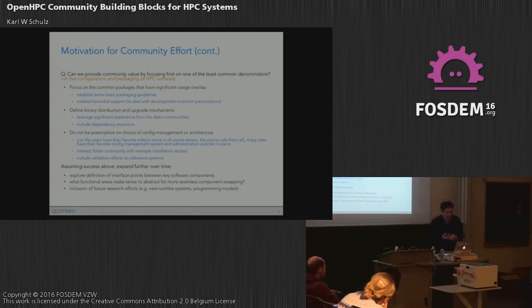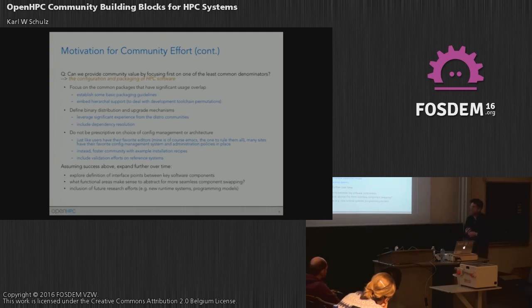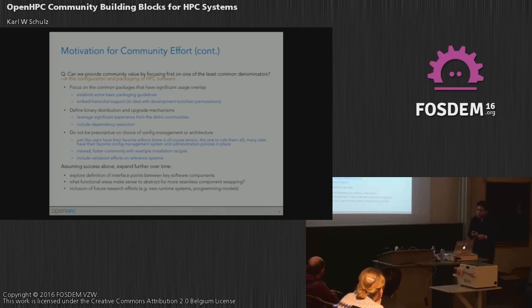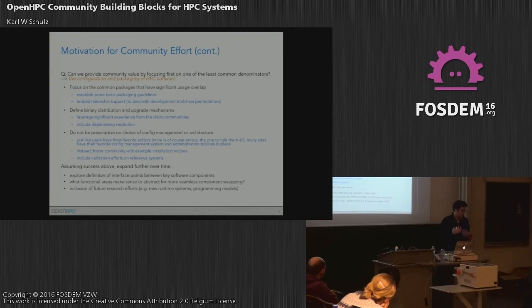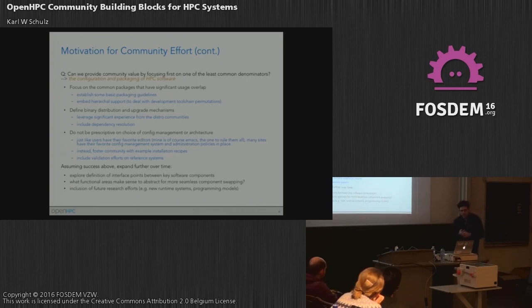Hierarchical support is something very important to HPC — it's very different than a typical distro install where you often only install one version of a compiler. HPC means having five versions of a compiler in many different families. To be clear, this is actually trying to provide a binary distribution for certain packages — think of it as a midstream-type distro. There is an effort to provide binaries so people can point their repositories to OpenHPC and install things directly, leveraging a lot of experience from the distro people, including dependency resolution.